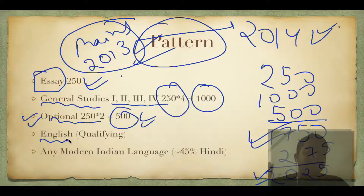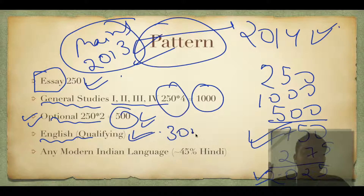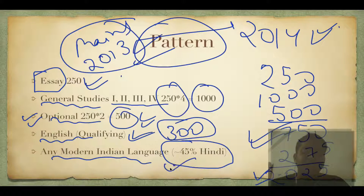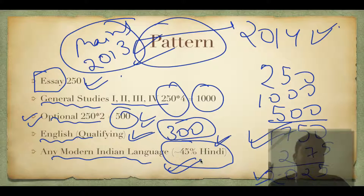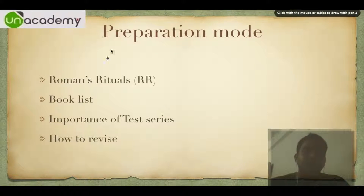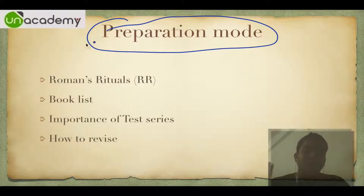There is an English paper which is qualifying in nature - it is 300 marks but the marks don't count toward the final total. Then there is any modern Indian language; approximately 45% of aspirants take Hindi, but you can take any modern Indian language.